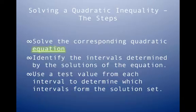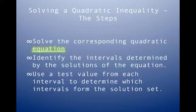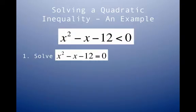Here's your recipe for solving a quadratic inequality. Step one: solve the corresponding quadratic equation. You should be comfortable with the quadratic formula to find your x-intercepts. Step two: identify the intervals determined by the solutions. Using the x-intercepts, we write three intervals. Step three: use a test value from each interval to figure out what our solution set is.